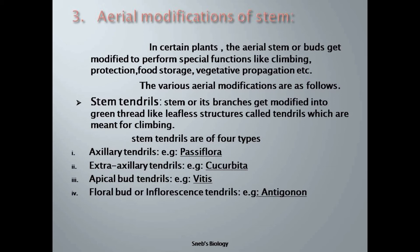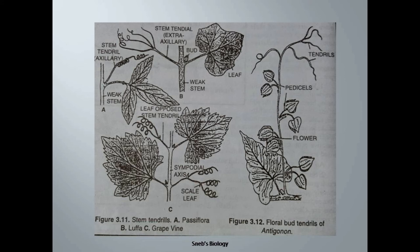First comes stem tendrils. The stem or its branches get modified into green, thread-like, leafless structures called tendrils, which are meant for climbing. These may be branched or unbranched. A scaly leaf is always present at the point of branching of the tendrils. Types include: axillary tendrils (e.g., Passiflora), where the axillary buds are modified into tendrils; extra-axillary tendrils (e.g., Cucurbita and Luffa); leaf-opposed or apical bud tendrils (e.g., grapevine), where the apical bud is modified into tendrils; and floral bud or inflorescence tendrils (e.g., Antigonon).